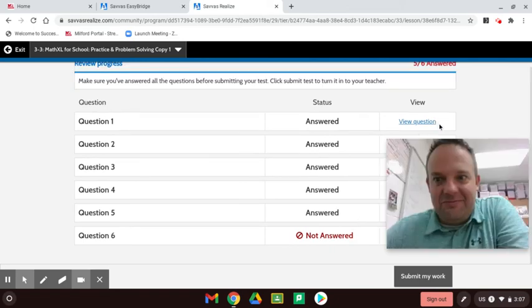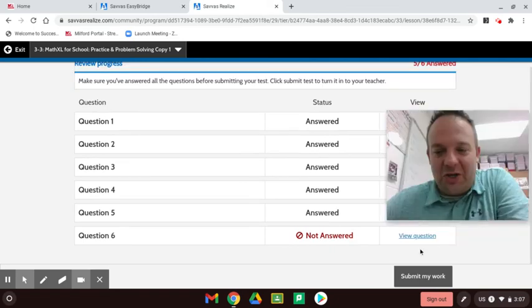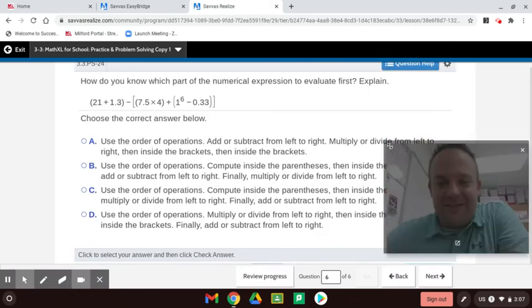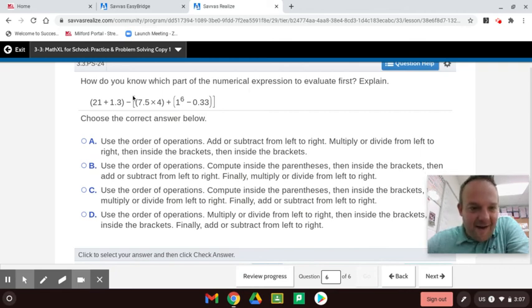I did not submit. We still have one more to go. And you guys probably want to know how to do this one, if anyone's even watching this. So let's see. How do we do this? How do you know which part of the numerical expression to evaluate first? Explain. Well, look at that. We got parentheses there. We have brackets. This is a term. And this whole thing is a term. So you could just solve this term and this term and then subtract them. But within the brackets are the nested parentheses. And within the nested parentheses, we would do this exponent here.